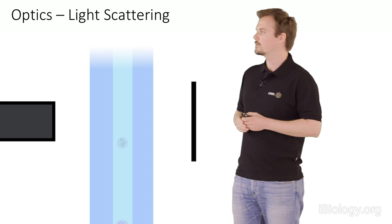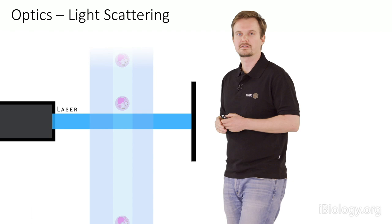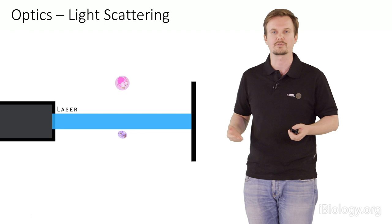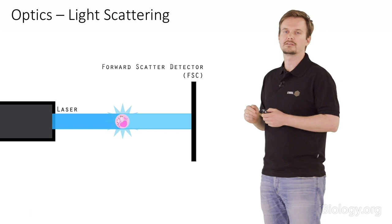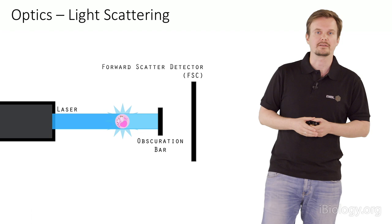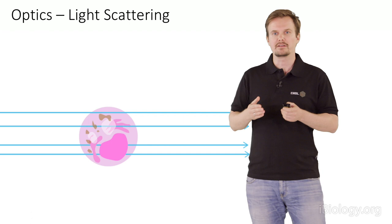Coming back to our setup: we have our fluid system and flow cuvette, into which we introduce our laser. With an optical instrument, our laser is tuned to the middle of the stream at the excitation maximum. This lets us detect the first parameter a flow cytometer generates: scattering of light. Light scattering is detected by a forward scatter detector — usually a photodiode. To avoid blinding it with the primary laser light, we use a so-called obscuration bar that blocks the primary beam.